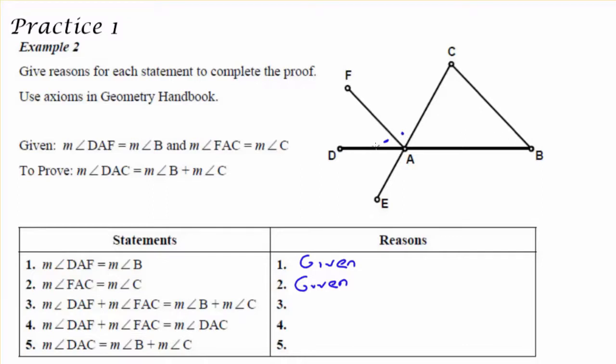Now the next statement says that DAF plus FAC is equal to B plus C. If I were to look at both of those in the diagram and where they are, I know that adding up two parts of any whole will be equal to the whole, which as we can recall was axiom 2. So I can say axiom 2 within geometry would be a good enough reason.